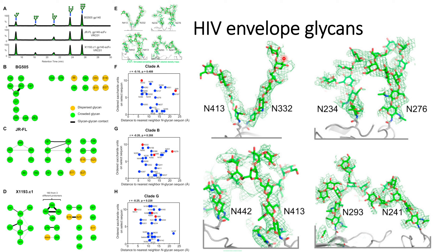What happens in this FoFc map is that if there is a difference between the model and the structure available in the crystal, the density will be low, as we can see on this side. Similarly, if there is some atom present in the model but not present in the crystal, then the density of the image — or we can say this